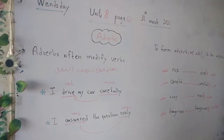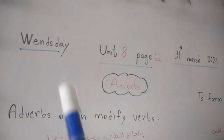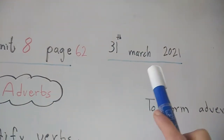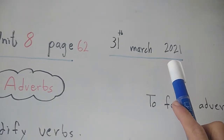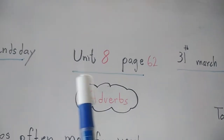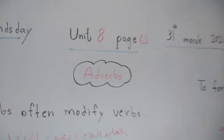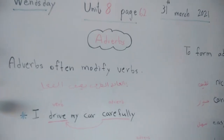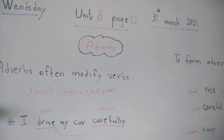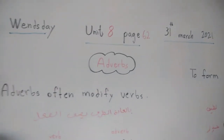Good morning everyone. Today is Wednesday, the 31st of March 2021. We are in unit 8, page 62. Today I will explain a grammar lesson — درسنا اليوم بيكون درس قواعد.